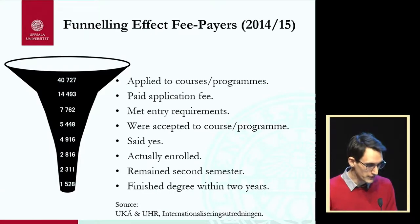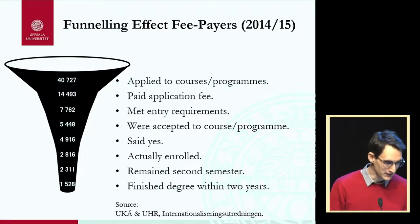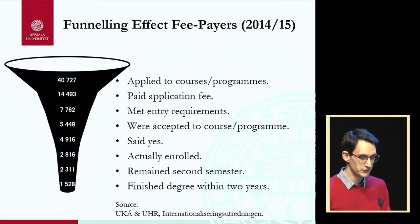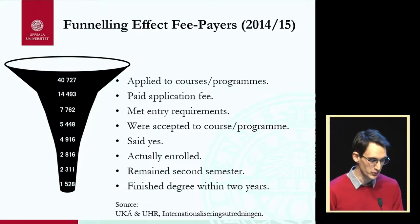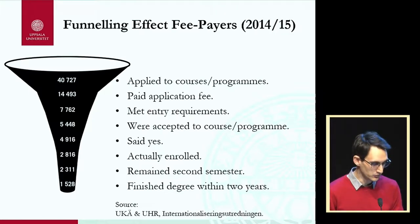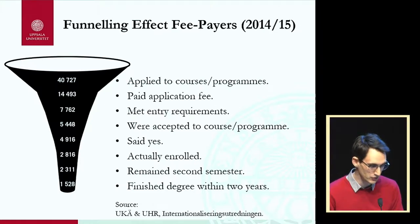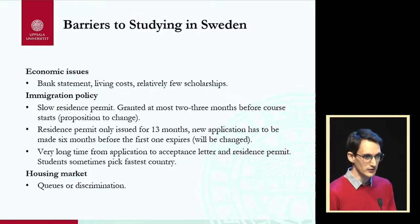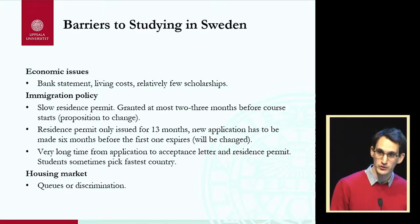An issue we face is the funneling effect — we have a lot of people who apply, but very few who actually meet the entry requirements, creating a lot of administration to work through. Among those who are accepted to courses, only about half actually enroll. So this is rather inefficient. The key question is: what are the barriers? Why do students either not apply, or why don't those who apply actually enroll?